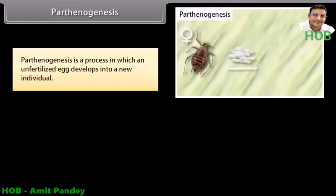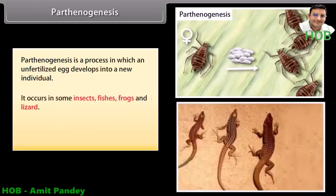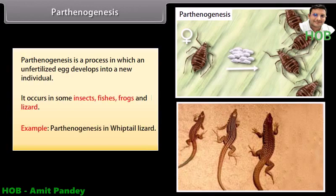Parthenogenesis. Parthenogenesis is a process in which an unfertilized egg develops into a new individual. It occurs in some insects, fishes, frogs, and lizards. Example: parthenogenesis in whiptail lizard.